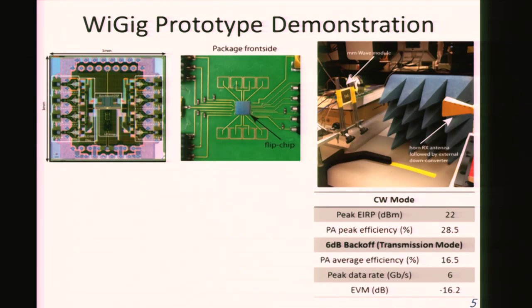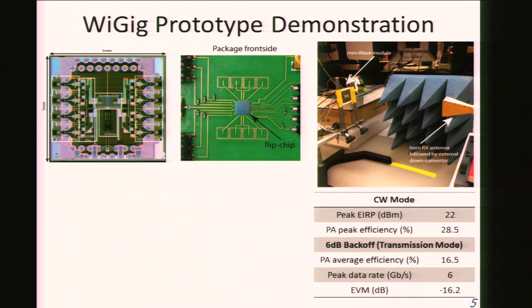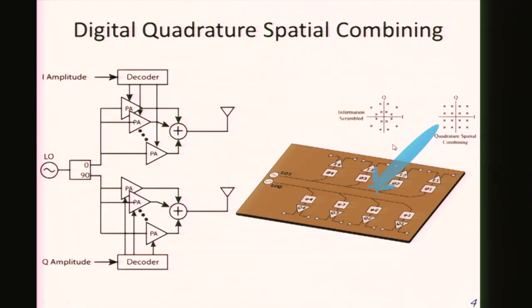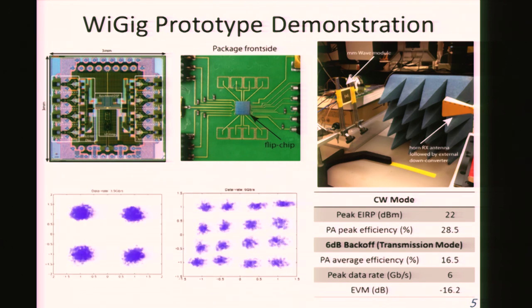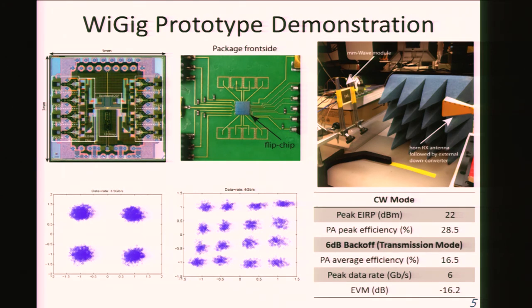To demonstrate this concept, we designed a 60 gigahertz prototype targeting YGIG applications. We fabricated a chip in standard 65 nanometer technology and designed a complete module. We flip the chip onto this three-layer Rogers board which also houses the antenna. These little squares you see are the antenna elements. Signals are generated on the chip and radiated by the antenna arrays. We use an external horn antenna to pick up the energy, and we're able to transmit and decode both BPSK and 16-QAM signal up to 6 gigabit per second data rate.